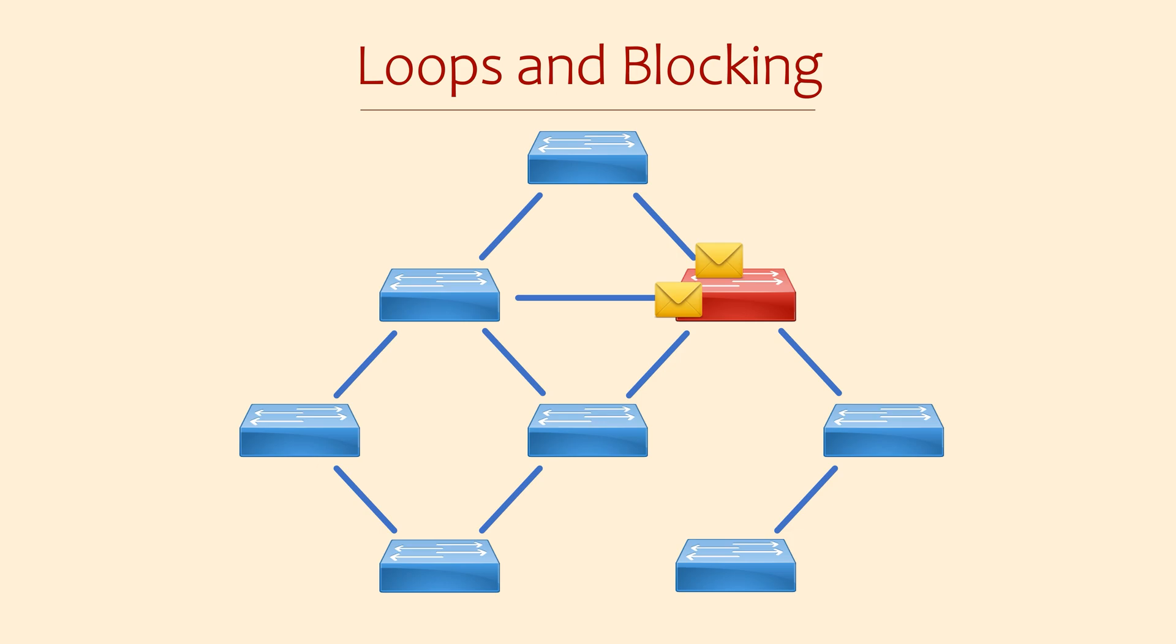Sometimes a switch may receive BPDUs on a few different ports. In the example shown here, the switch has found two paths to the root bridge. The BPDU with the shortest path is the superior BPDU. The BPDU with the longest path is the inferior BPDU.